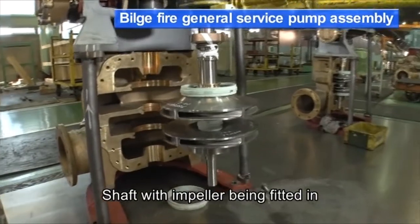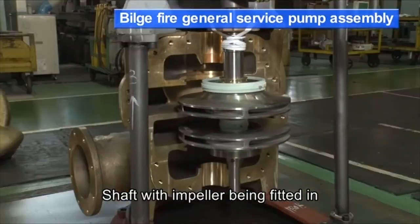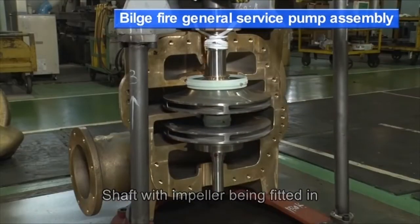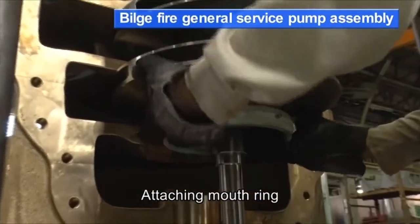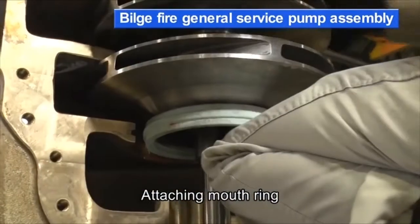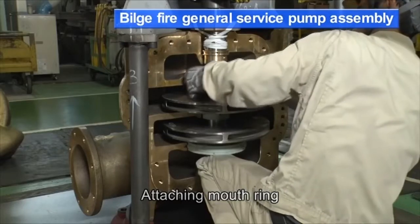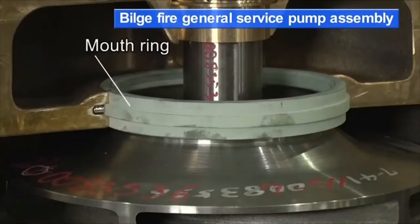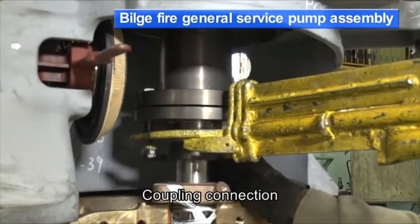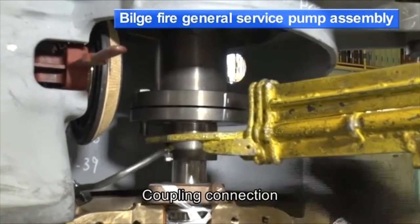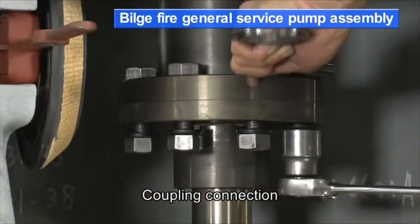The shaft with an impeller is fitted in. The mouth ring is attached. The coupling is connected. With pumps that have no line bearing at the bottom, alignment is fixed by motor coupling connection.